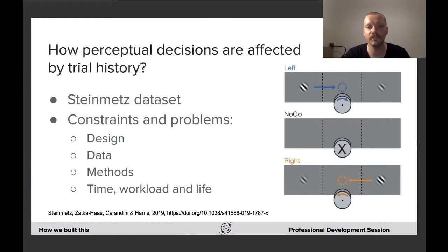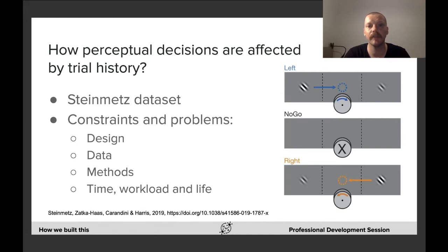Making good decisions based on perceptual information is critical for effective acting. But what non-perceptual factors influence such choices? To address such questions, we use this timeless dataset as it contains behavioral and neuronal responses of mice in a visual discrimination task.